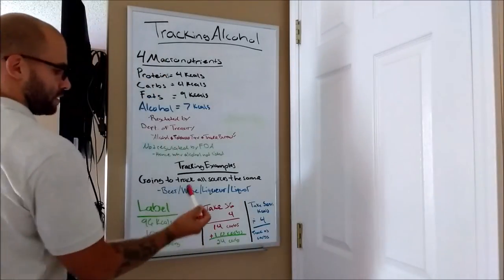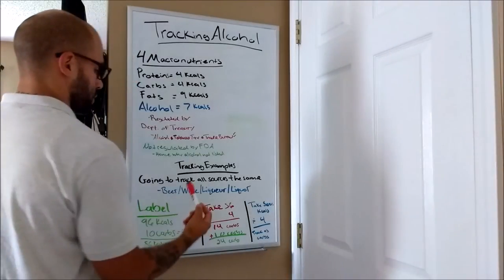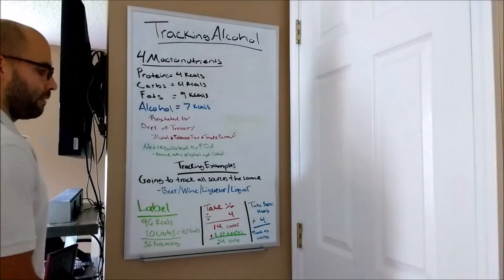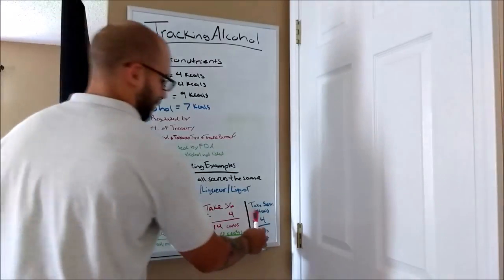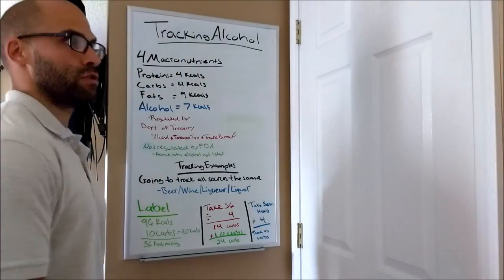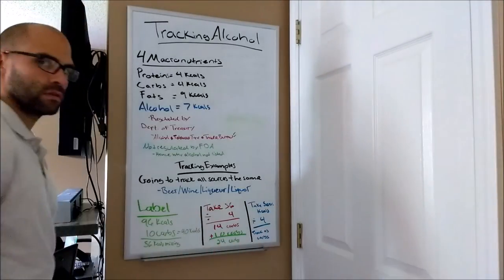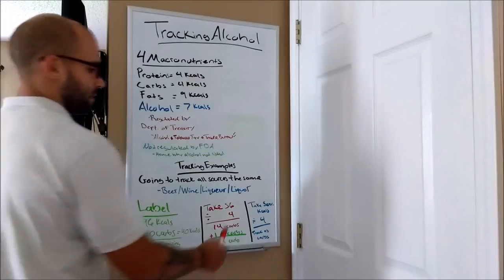With wine, generally what you can do is if you're using MyFitnessPal or any other type of food tracker, you can pretty much just use the barcode scanner, scan the bottle, and what you'll find is it'll give you the caloric value. And what you can do is take the caloric value divided by four and for whatever is considered a serving, which is usually about eight ounces for a glass of wine, is going to give you your carb source towards your day.